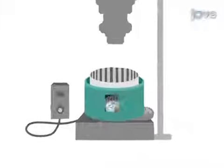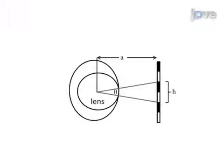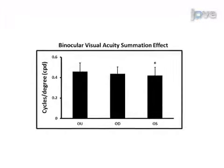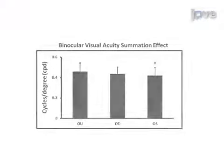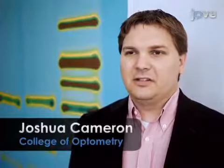Next, the fish is immobilized within the device and an OKR is elicited. The binocular and monocular spatial acuity thresholds are determined using different sized gratings and a modified staircase approach. Finally, the visual acuity is calculated. Results can show visual acuity changes within a population of fish as they age or in diseased or treated fish. The main advantage of the OKR over existing methods such as the optomotor response (OMR) is that it is more clinically relevant and reliable.